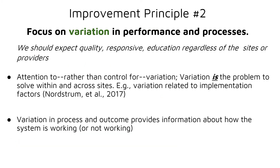The second improvement principle is to focus on variation in performance and processes. While some variation is expected in any system, we should expect some quality in response regardless of sites or providers. This entails attending to rather than controlling for variation, as variation is the problem we are trying to solve — including variation in processes and outcomes to provide information about how our system is working or not working.